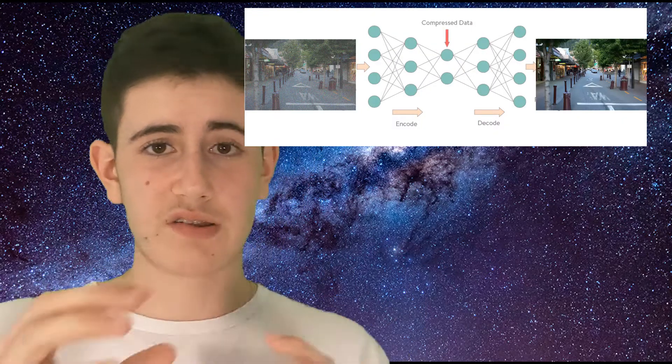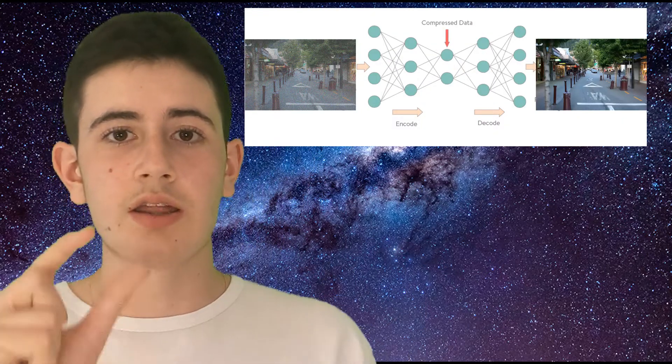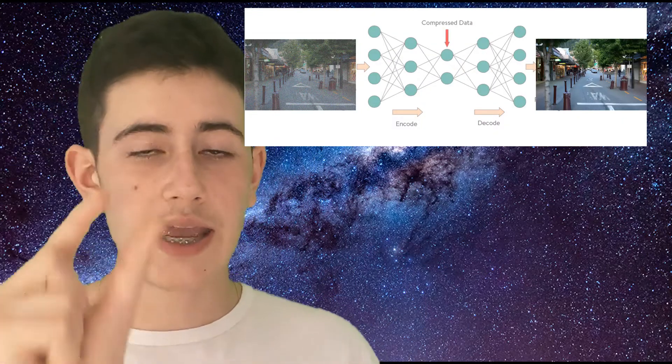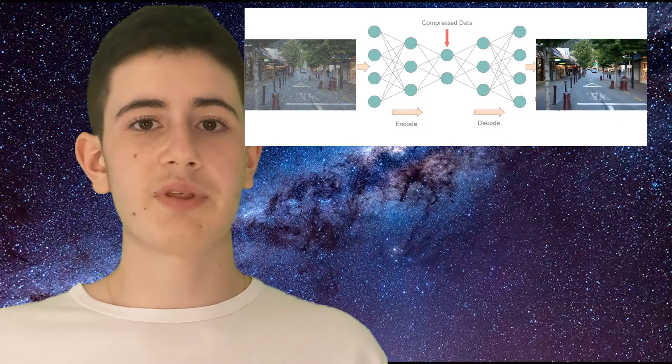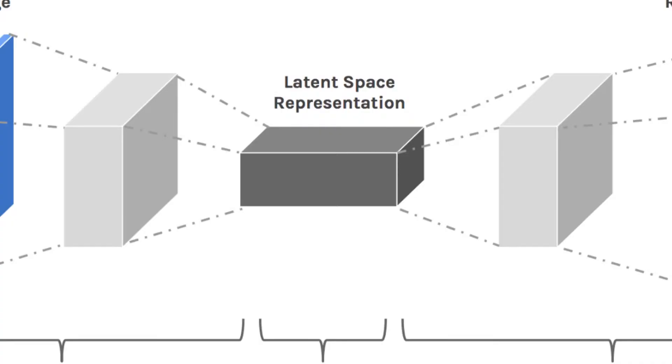That's the main capability of an autoencoder. The next step is for the encoder to take that and compress it. After it compresses it, the data goes into something called a latent space. And the latent space is where this small amount of data lives.